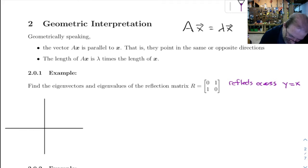So we've got our X and Y axes, and the line that it's going to reflect across is Y equals X. All right, so let's say we have this vector out here.